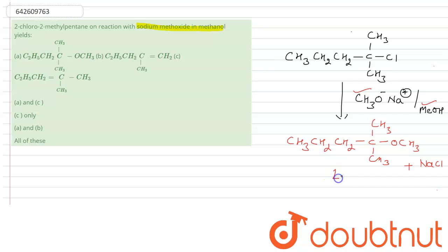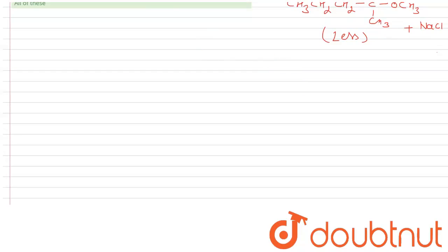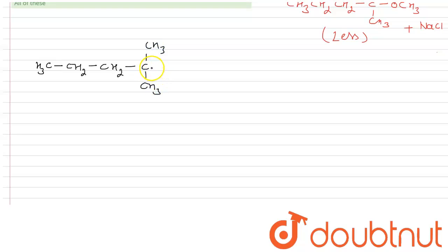This substitution product is less in yield. Now let's move to the elimination product. We know that if we take a strong nucleophile in polar solvent, the elimination product is the major product. Drawing the elimination product: CH3–C(CH3)=... with the base acting on alpha hydrogens. There are two possible alpha hydrogen positions.